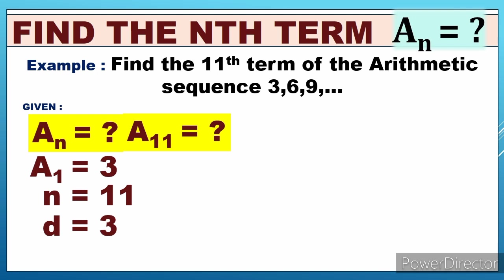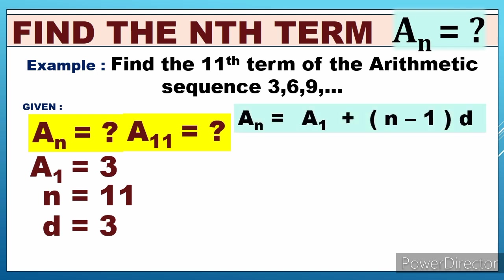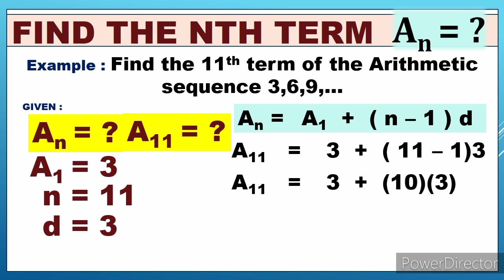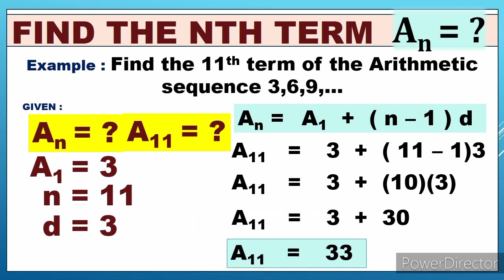Now we substitute the values into the formula. A sub 11 equals a sub 1, which is 3, plus n minus 1, which is 11 minus 1, times d, which is 3. So a sub 11 equals 3 plus 10 times 3. That gives us 3 plus 30, which equals 33. Therefore, the 11th term is 33.